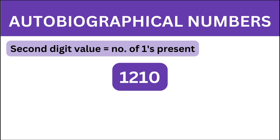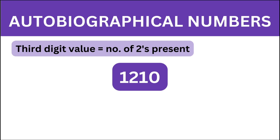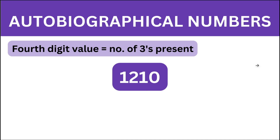The second digit tells us how many times 1 is present in the number. The second digit is 2, meaning our number must contain 1 twice. As you can see, 1 is present twice in our number, so that is true. The third digit denotes the count of 2 in our number. The digit here is 1, meaning our number must contain 2 only once, which is true since 2 is present only once.